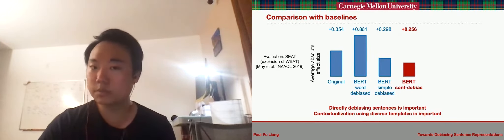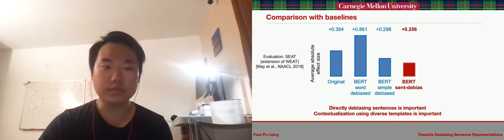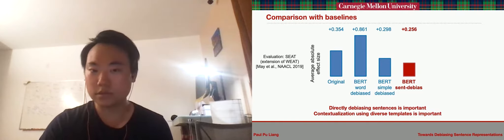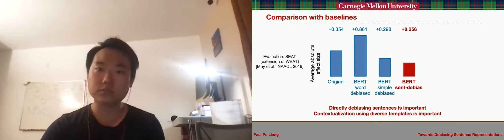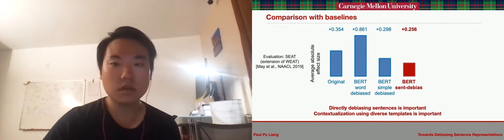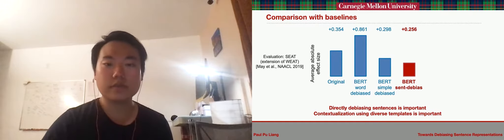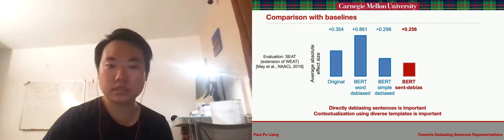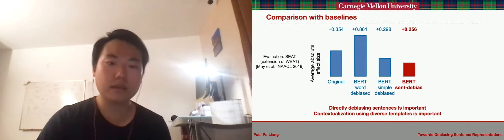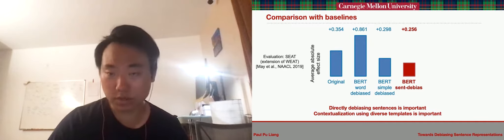In comparison with BERT simple, we observe that using diverse sentence templates makes a difference on how well we can remove biases from sentence representations. This supports our hypothesis that using increasingly diverse templates estimates a bias subspace that generalizes better to different words in their context.